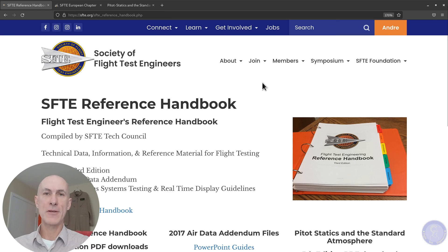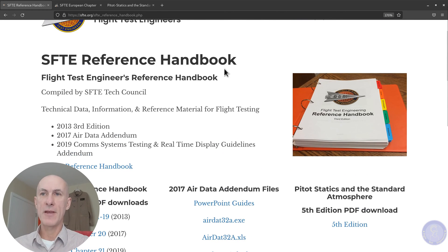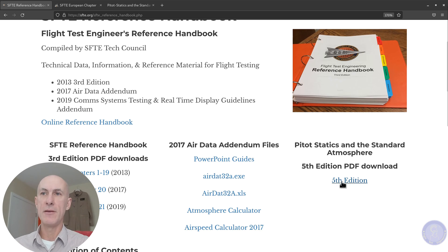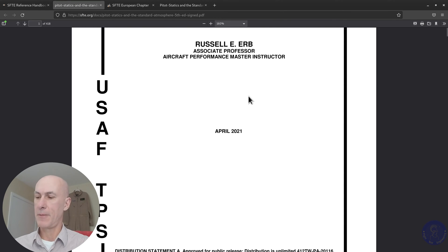If you're a member of the Society of Flight Test Engineers, you can get the main reference that I'm using here, which is the updated fifth edition of the excellent book that is used in the USFTPS and authored by Russell Erb. Here on the SFTE reference handbook page, you can see the fifth edition here, and if you click, you have direct download to this excellent reference here.